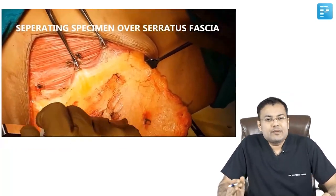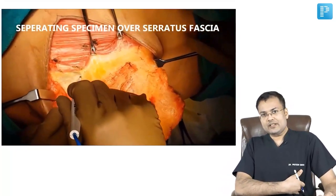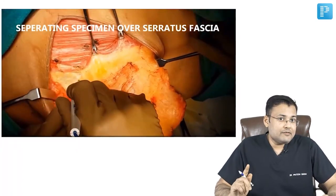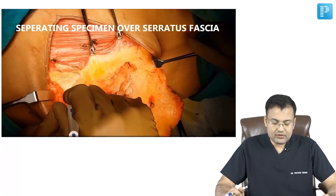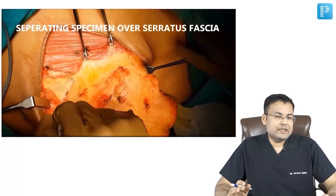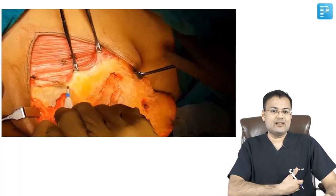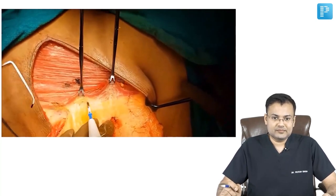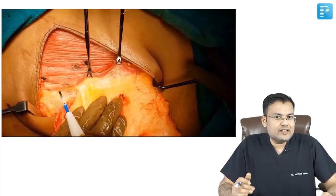The specimen is being separated over the serratus fascia. This is the serratus anterior muscle — there is fascia covering serratus anterior. The specimen is being separated over serratus fascia laterally. After separating the specimen over serratus fascia, we have to perform the axillary dissection.